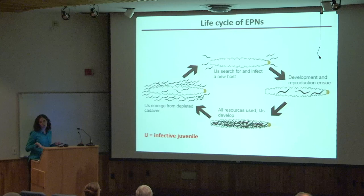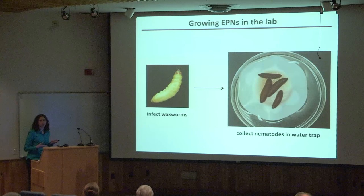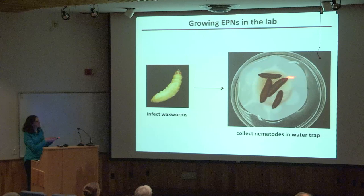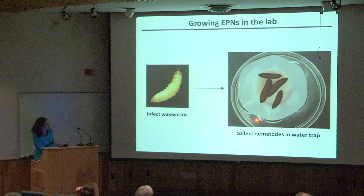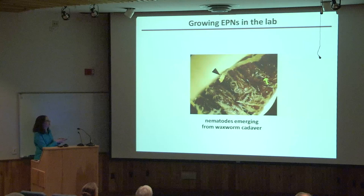To grow these worms in the lab, we typically infect waxworms — the larvae of the greater wax moth, Galleria mellonella. We put the waxworms in a dish containing the nematodes and they naturally infect and kill the waxworms. After about 10 days, we place the cadavers onto a water trap — an elevated platform surrounded by water. In the presence of water, infective larvae emerge from the cadaver into the water, and we can collect them. You can see white specks in the water — those are all worms that have emerged, and they can also be seen poking out through the cadaver cuticle.